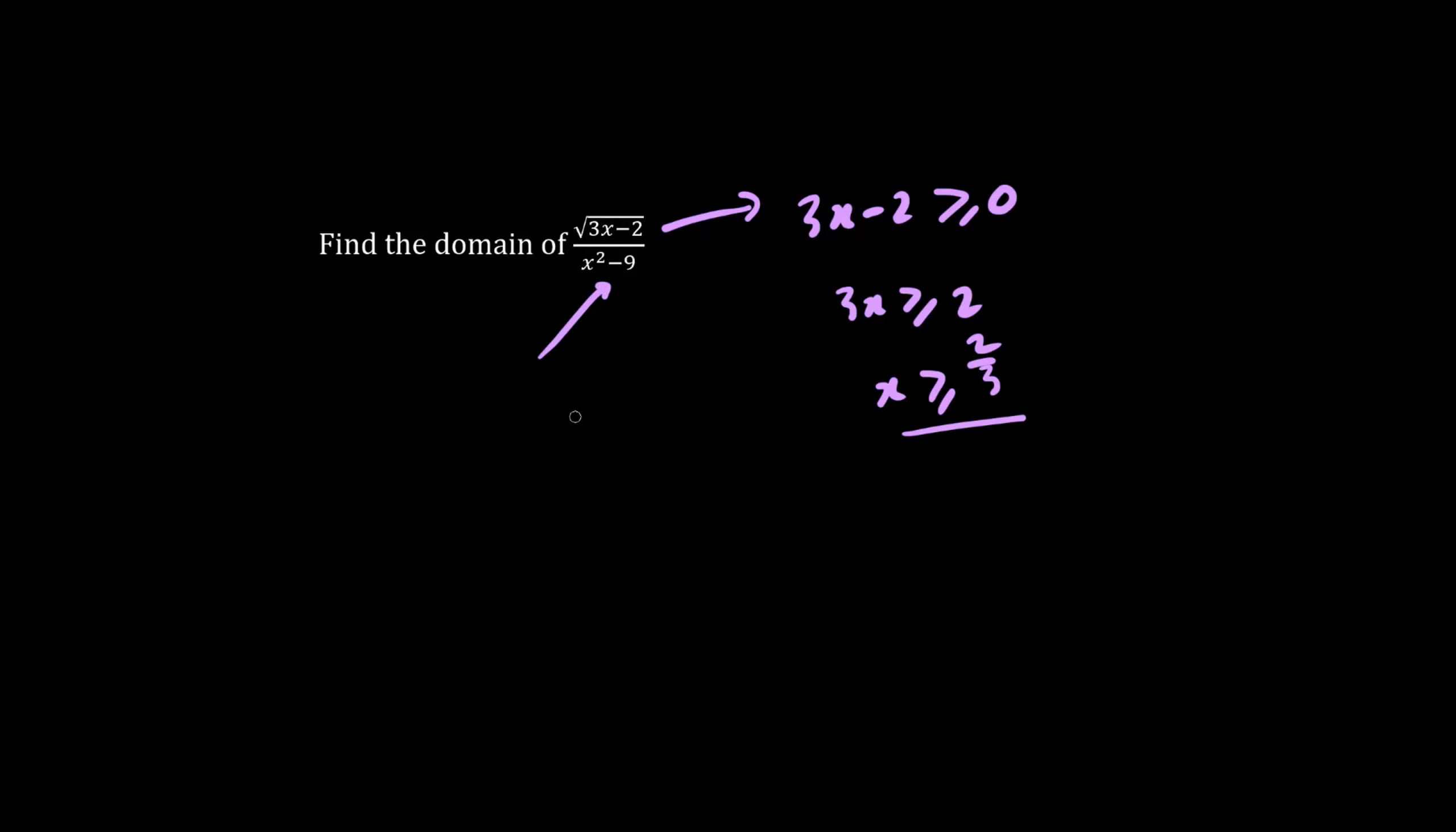Furthermore, the denominator can't be 0. x squared minus 9 does not equal to 0. We throw the 9 over, we get x squared does not equal to 9. And we take the square root of both sides. x does not equal to plus or minus 3.